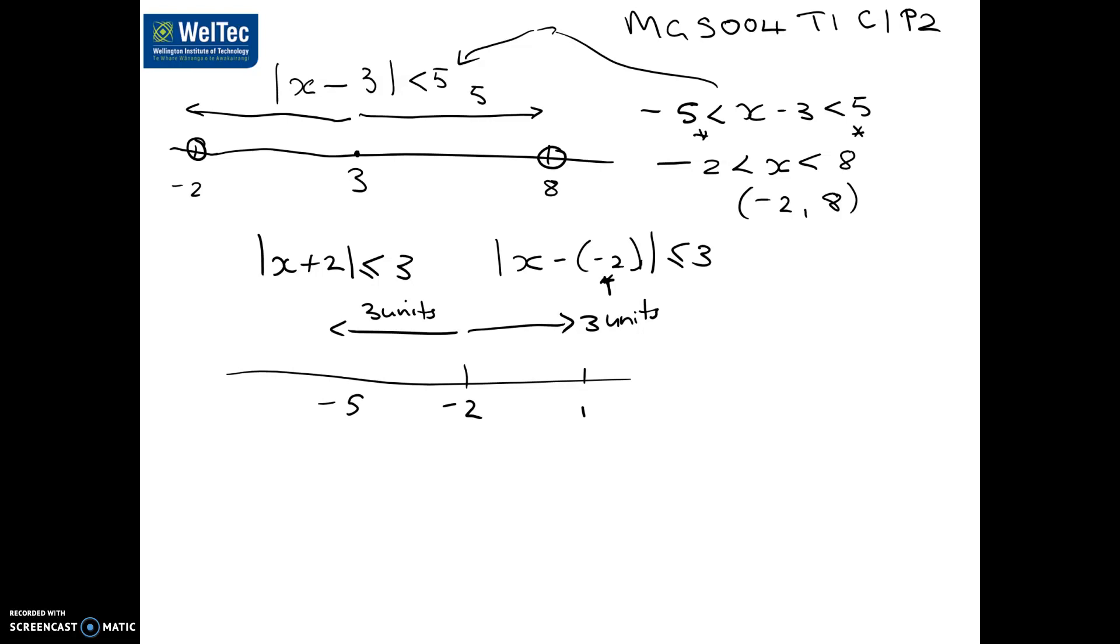Another way of writing our original statement would be to write it as negative 3 is less than or equal to x plus 2, which is less than or equal to 3. We're going to take 2 away from each side. So then we get negative 5 is less than or equal to x, which is less than or equal to 1.